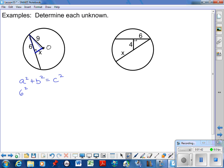We'd have 6 squared plus x squared equals 9 squared. 36 plus x squared equals 81, so x squared would be 45. The unknown value that we're looking for is the square root of 45.